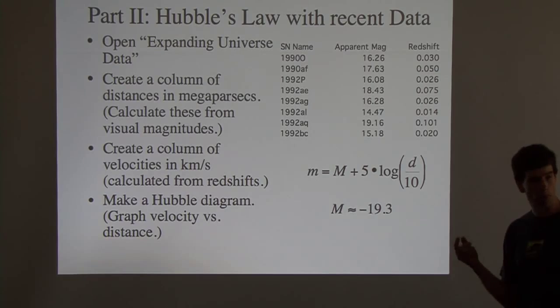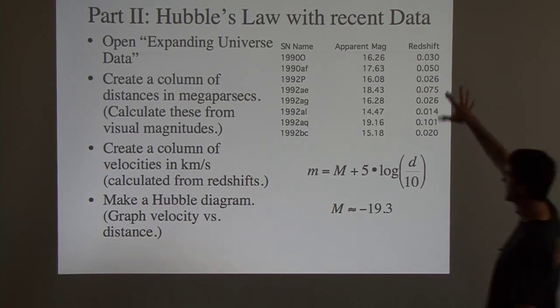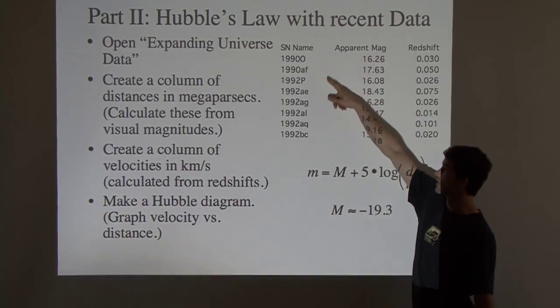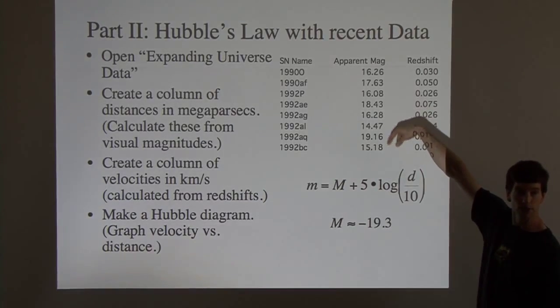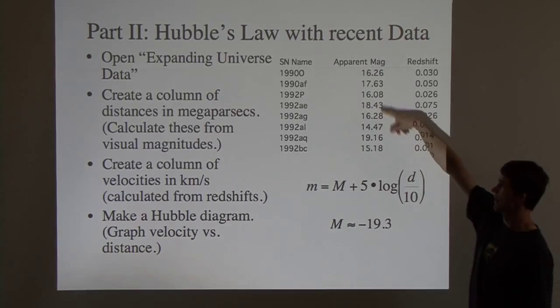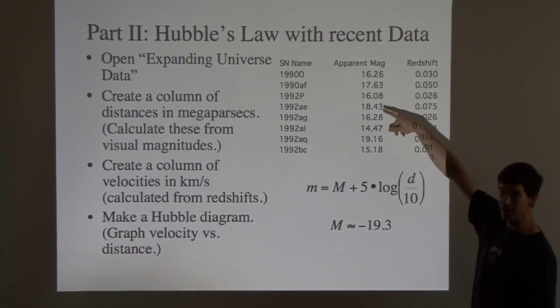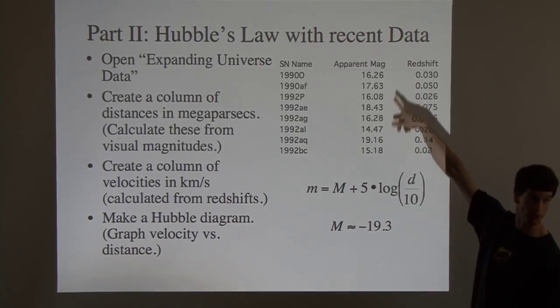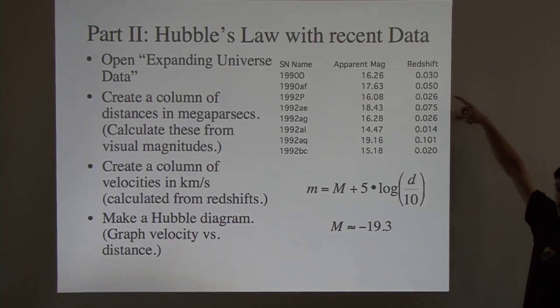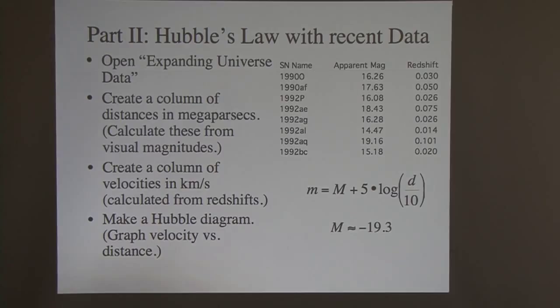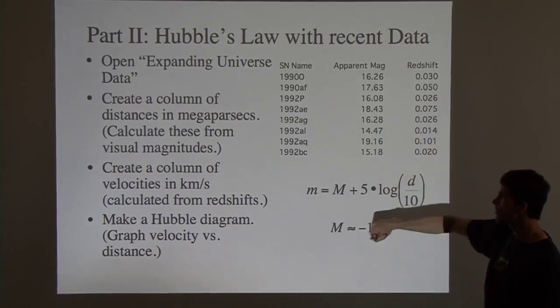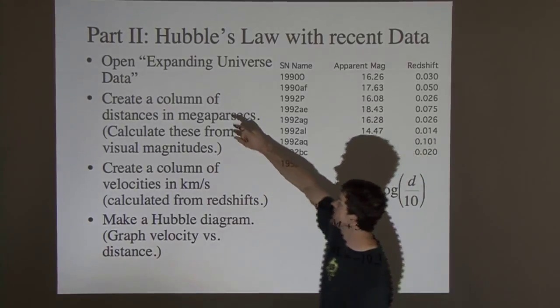What we're going to do now is, in a moment, we're going to use Excel. And here's just a sample of what the data looks like. These are just the names of several different supernovae that were detected in the early 90s. It's got their apparent magnitudes. Now, are these bright things or dim things? Remember, big numbers are dim. So you're not going to see any of these just with your eye. You need telescopes to find these things. They're very dim. And then also the redshifts for those galaxies. And what you're going to do in your Excel spreadsheet is you're going to start making some new columns. We've got apparent magnitudes and redshifts. We want to turn those into distances and into velocities.